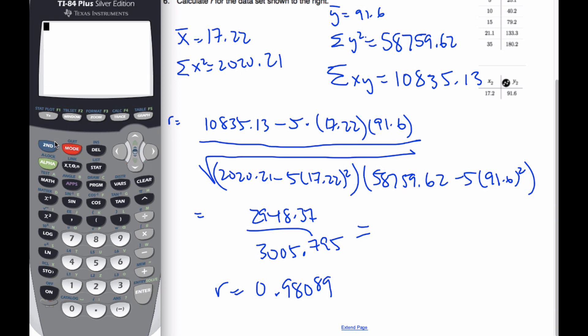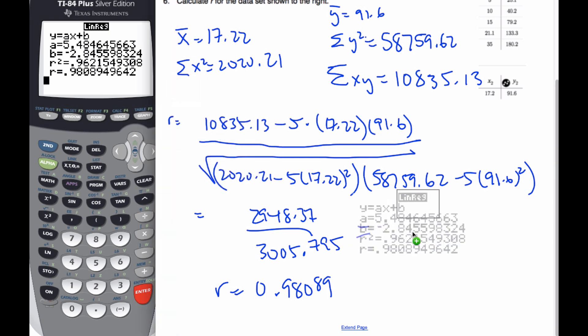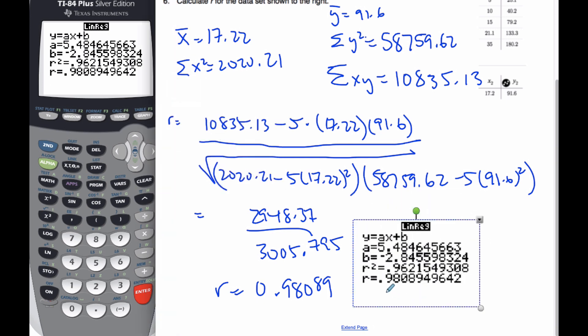So now when we do that calculation for linear regression, we get our r value here, and we can see that r is indeed correct. And so that is how r is calculated.